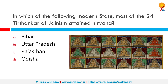In which of the following modern states did most of the 24 Tirthankaras of Jainism attain Nirvana? The correct answer is Bihar. Jainism in Bihar traces a long history since the times of the 24th Tirthankara Mahavira, who was born in Vaishali. Vasupujya, the 12th Jain Tirthankara, was born in Champapuri, Bhagalpur. Vardhamana Mahavira, the 24th and last Tirthankara of Jainism, was born in Vaishali around the 6th century BC.